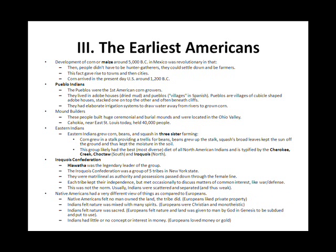Topic 3: The Earliest Americans. Development of corn, or maize, around 5000 BC in Mexico was revolutionary in that people didn't have to be hunter-gatherers. They could settle down and be farmers. This fact gave rise to towns and then cities. Corn arrived in the present-day U.S. around 1200 BC.